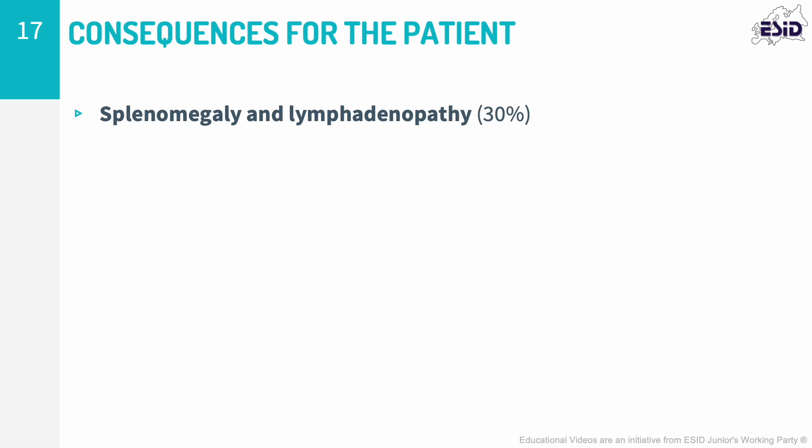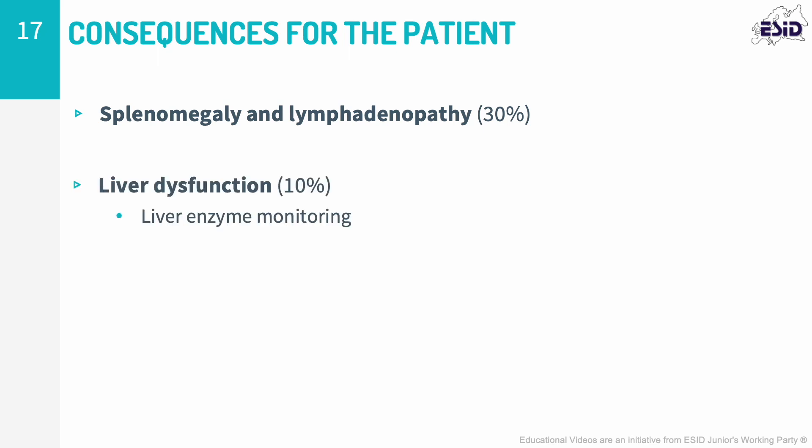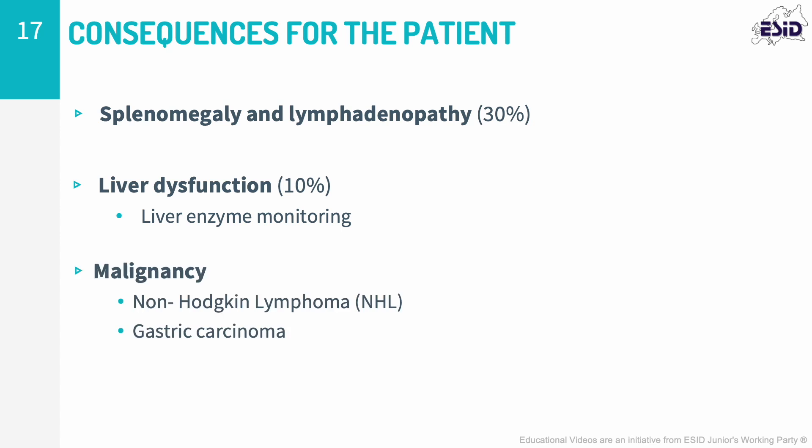Splenomegaly and lymphadenopathy are common in CVID patients, although the pathogenesis of these findings is not always known. Liver dysfunction has been described in approximately one in ten patients; thus, liver enzyme monitoring is important. Finally, the increased risk of malignancy has been documented, particularly non-Hodgkin's lymphoma as well as gastric cancers. Non-Hodgkin's lymphomas are often extranodal and of B-cell origin, though prevalence varies amongst different cohorts.